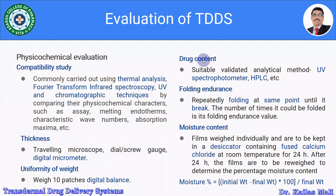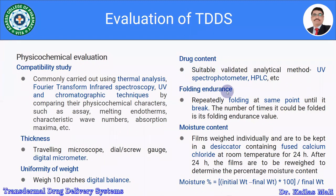Drug content is important to ensure the required quantity of drug in the transdermal patch. A suitable validated analytical method must be used, for example UV spectrophotometry or high-performance liquid chromatography (HPLC); it is also possible to use GC or GC-MS. Folding endurance gives an idea about the mechanical properties of the transdermal patches.